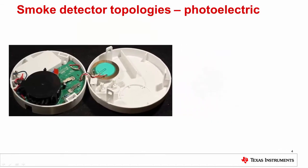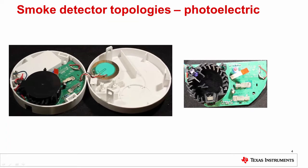Coming back to the teardown, we can begin to identify the key components. With the cover removed from the optical chamber, we can identify the IR LED, which is used to illuminate the chamber. There is also a photodiode which is used to detect photons of the IR light from the LED, which are scattered or reflected off of smoke particles inside the chamber. Because the sensor is designed to detect scattered light, the optical chamber is designed as a light catcher, and only a very small portion of the IR light from the LED is picked up by the photodiode when there is no smoke in the air.